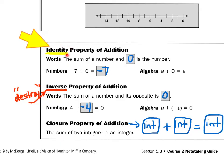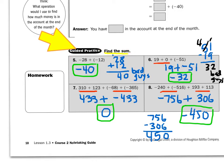Let's look at some properties. The identity property means we don't change the value of the number, so the sum of a number and zero is that number: negative seven plus zero equals negative seven, and in algebra, a plus zero equals a. The inverse property of addition: inverse means something is getting destroyed, so the sum of a number and its opposite equals zero — four plus negative four equals zero, and in algebra, a plus the opposite of a equals zero. The closure property means any time I have an integer plus another integer, the result is an integer. Now for guided practice — find the sum using the battle method.